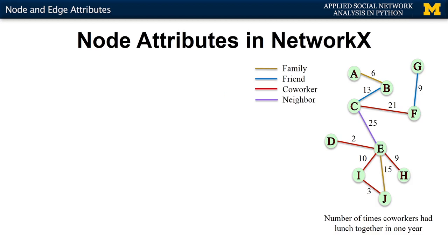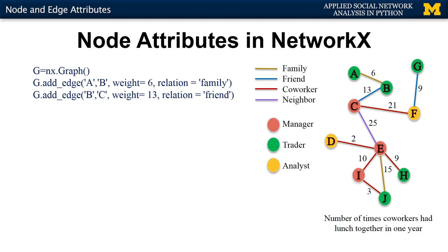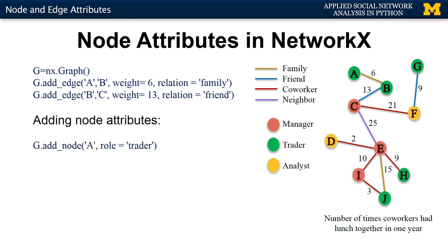We've talked about how to add and access attributes of edges. We could also imagine having attributes stored on the nodes. Going back to the co-worker lunch example, imagine nodes are colored by their role in the company — some are managers, some are traders, and some are analysts. To capture this in NetworkX, after constructing the graph in the usual way, we add node attributes using the `add_node` function. Even though the node is already added, we call it again with an attribute like `role='trader'`. So node A and B are traders, and node C is a manager.